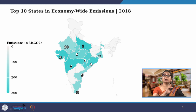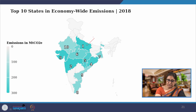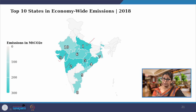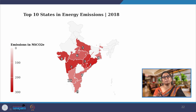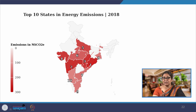Looking at state-wise emissions: for overall economy-wide emissions, Uttar Pradesh tops the list, followed by Maharashtra and Gujarat — reflecting their high industrial activity, agriculture, and power generation. For energy emissions specifically, Orissa tops the list, followed by Maharashtra and Chhattisgarh, indicating where the thermal power plants are situated — these are energy-producing states, not necessarily the consumer states.